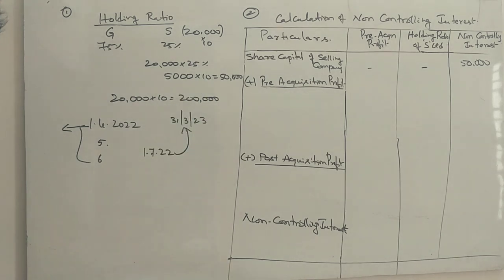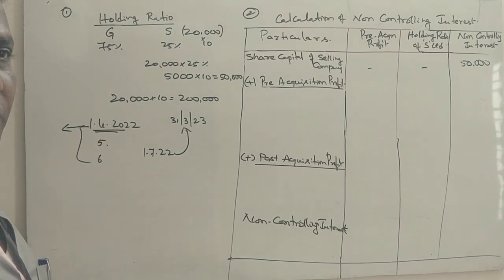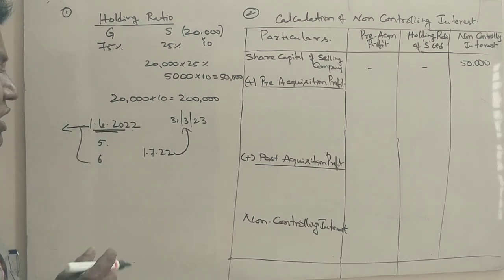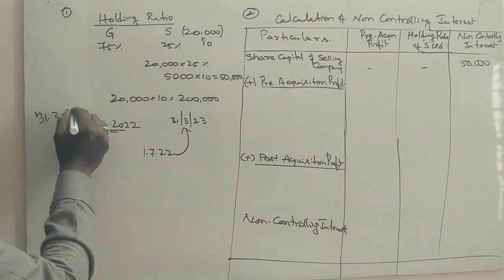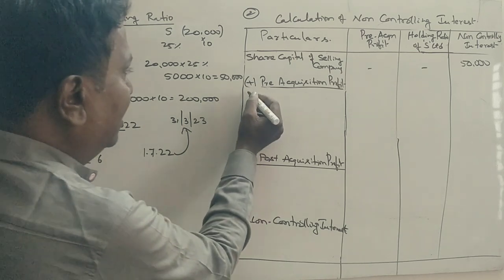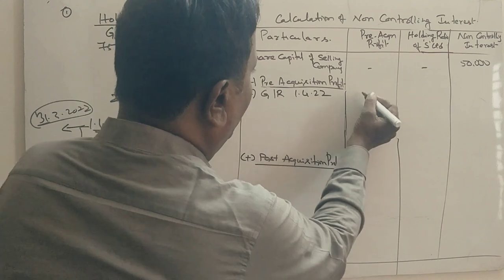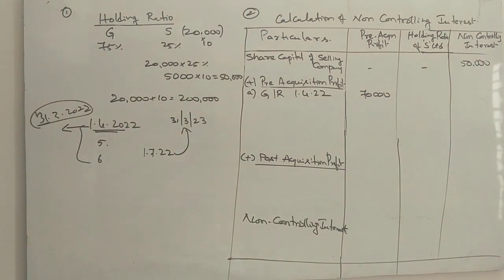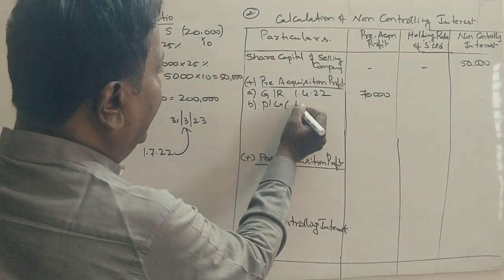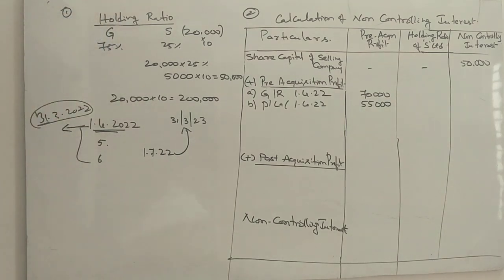Now, share capital is accounted. Second point: balances as on 1/4/2022 — this data is given. Beginning of the financial year, opening balance of 2022, which is the closing balance of the previous year — before the purchase. So general reserve as on 1/4/22 is 70,000 rupees. Profit and loss as on 1/4/22 is 55,000 rupees. Net profit during the year ending 31st March 2023 is 45,000 rupees.